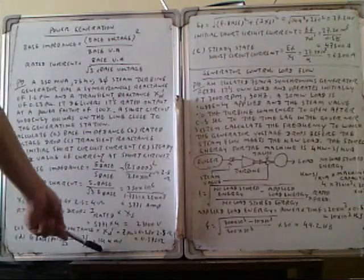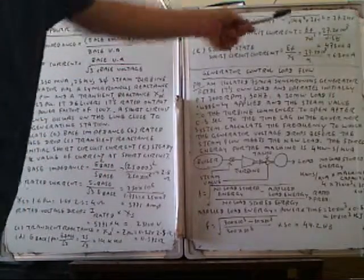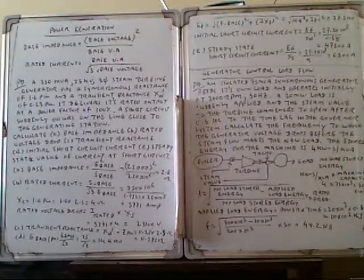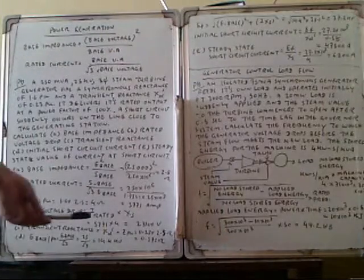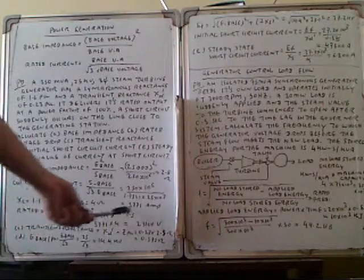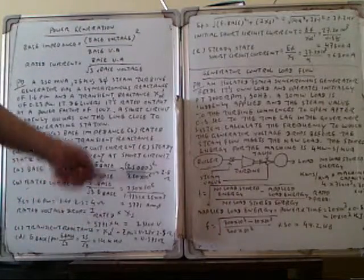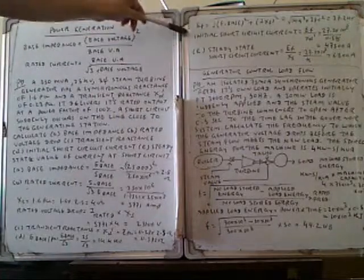Substituting the values — base phase voltage is 14.4 kV and the rated voltage drop is 23.1 kV — we calculate: square root of (14.4² + 23.1²), which gives approximately 27.2 kV.